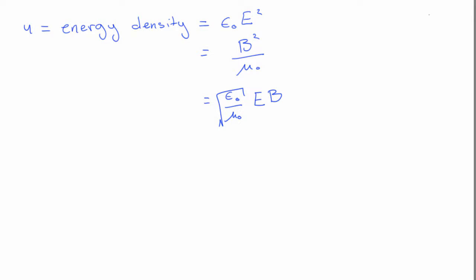Okay, so we now know what the energy density is of an electromagnetic wave anywhere at the point in space. Just as a point, the units of this are joules per metres cubed.